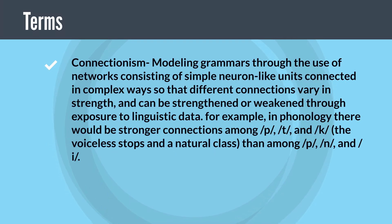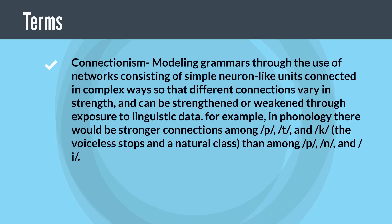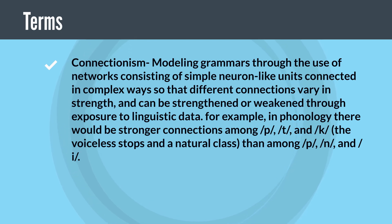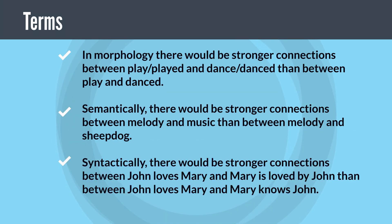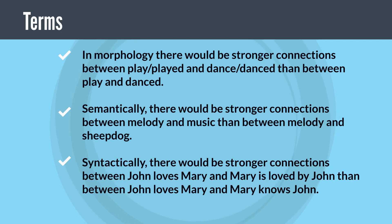Connectionism: modeling grammars through the use of networks consisting of simple neuron-like units connected in complex ways so that different connections vary in strength and can be strengthened or weakened through exposure to linguistic data. For example, in phonology there would be stronger connections among /p/, /t/, and /k/ — the voiceless stops and a natural class — than among /p/, /n/, and /i/. In morphology there would be stronger connections between play/played and dance/danced than between play and danced. Semantically, there would be stronger connections between melody and music than between melody and sheepdog. Syntactically, there would be stronger connections between 'John loves Mary' and 'Mary is loved by John' than between 'John loves Mary' and 'Mary knows John.'